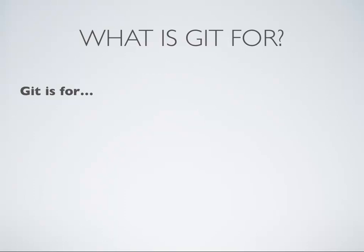So let's talk about Git. Git is a version control system. Git takes a snapshot of your work at a particular time, saves it, lets you work some more, take another snapshot, lets you work some more, take another snapshot — and you have a chain of these that represent the history of your work on a project.